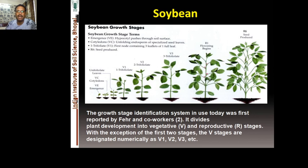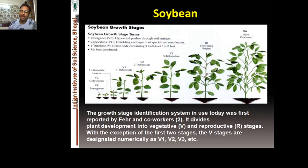R7 is physiological maturity and R8 is harvest maturity. At physiological maturity the plant may still look green, but it is physiologically dead — it no longer performs photosynthesis or produces biomass. This covers the legume crop developmental stages.